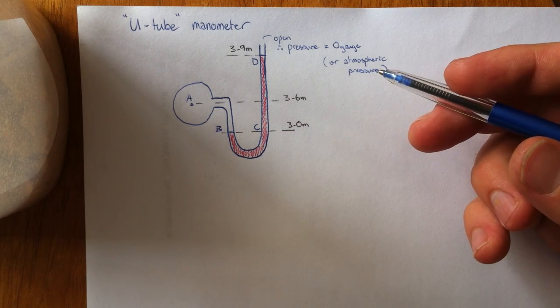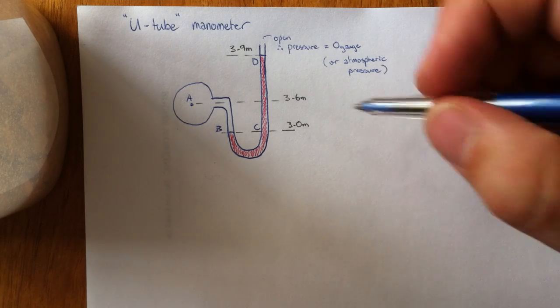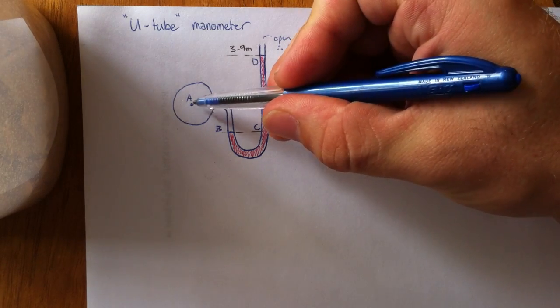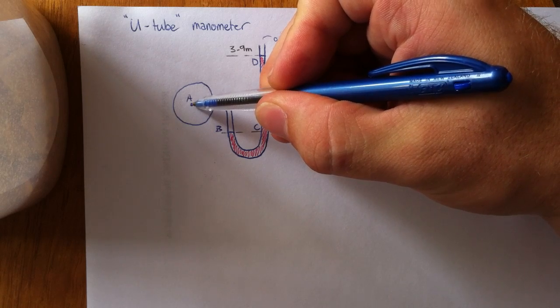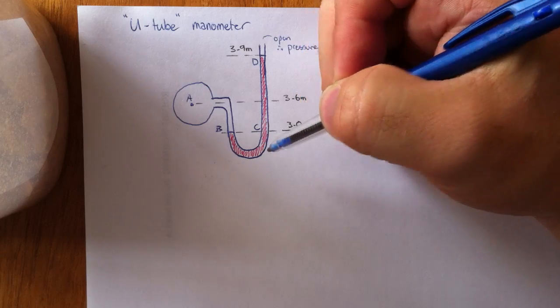Hi there folks, just wanted to go through what's called a U-tube manometer problem. Basically it's establishing the pressure of a point here inside the manometer.